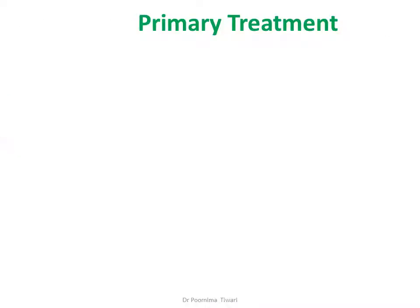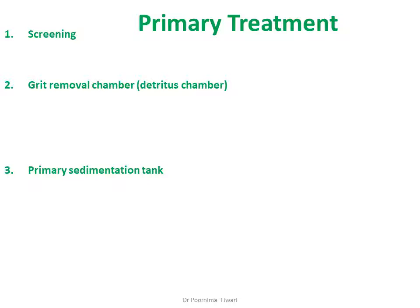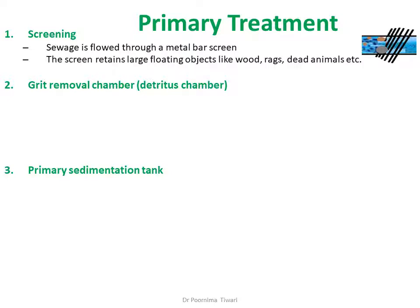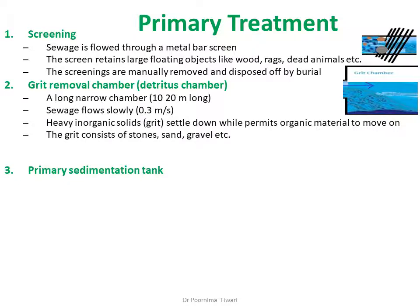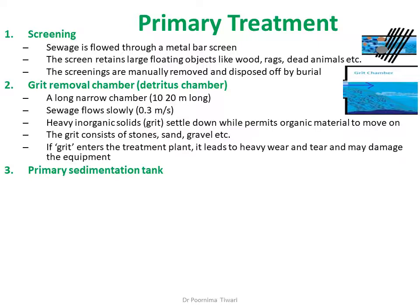Primary treatment in detail: the first step is screening, second is grit removal, and third is the primary sedimentation tank. In screening, sewage flows through a metal bar screen which retains large floating objects like wood, rags, and dead animals. The screenings are manually removed and disposed of by burial. The sewage then flows through a long narrow chamber known as the grit chamber, where it flows slowly enough to keep organic matter moving while heavy inorganic solids settle down. The grit — consisting of stones, sand, gravel — is removed to prevent wear and damage to plant equipment.